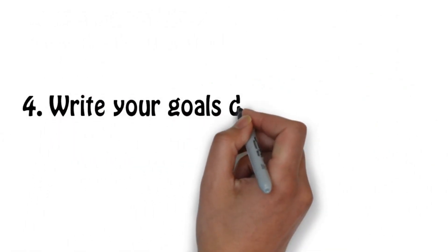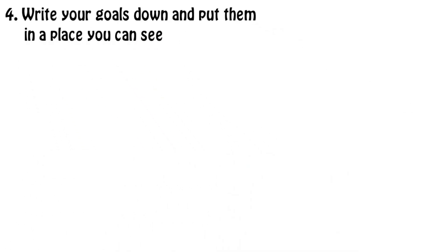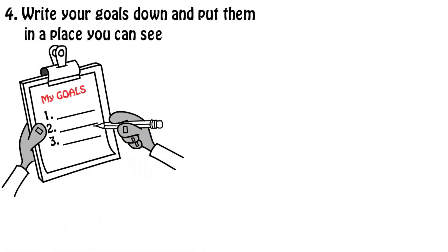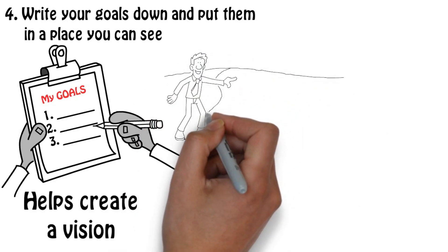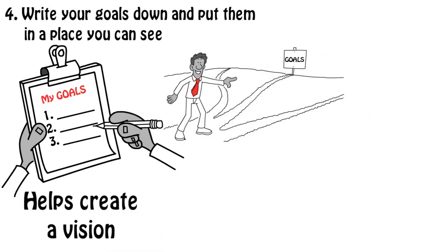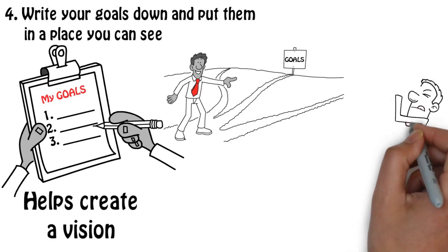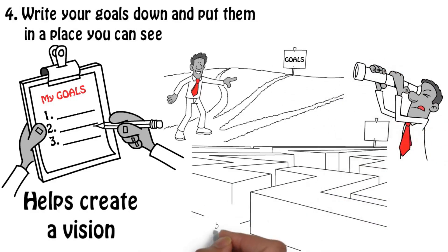Number 4: Write your goals down and put them in a place you can see. Writing down your goals helps create a vision in your mind of how you want to be in the future. You can visually see the goal and understand the difference it will make in your life. When we see something clearly, it creates in how we act as we have clarity and direction.